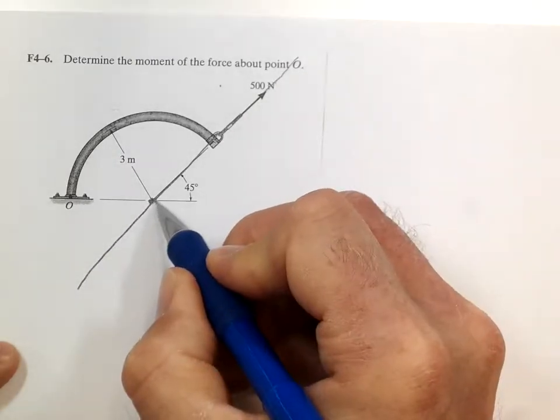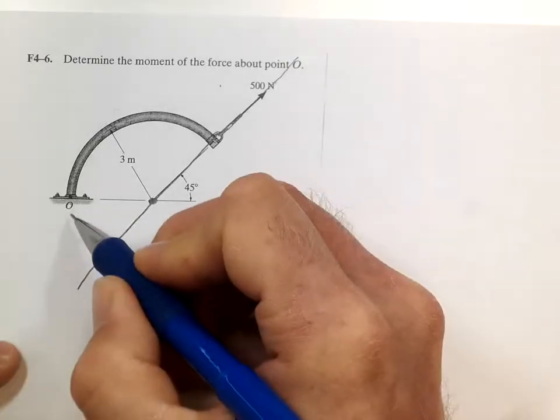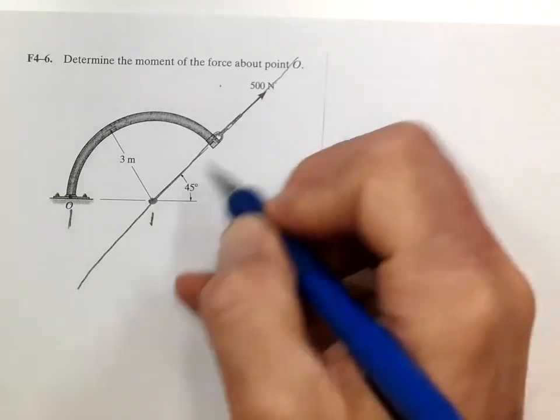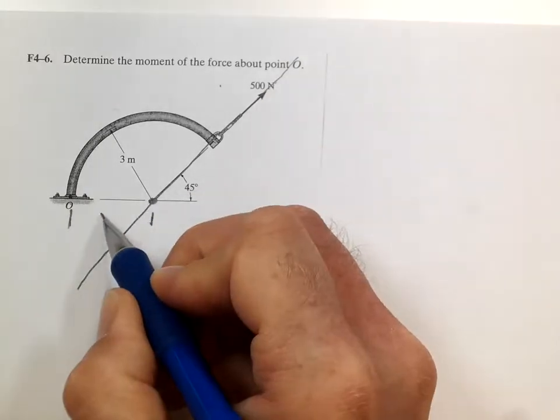And so the distance from O to the center of that curvature, where the force acts through, is easy to tell. That's 3.